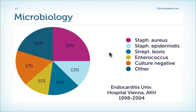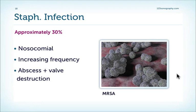Data from our institution clearly shows we now have Staphylococcus aureus infection as the most common pathogen causing endocarditis, and similar results have been published from other institutions. Staphylococcal infection is very serious because it very frequently causes valvular destruction, abscess formation, and complications. Approximately 30% of endocarditis is caused by staph infection, often associated with nosocomial infection. Staph is on the rise and a truly aggressive pathogen — a truly ugly bug.